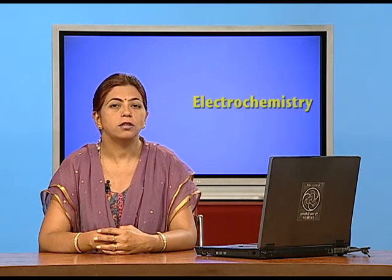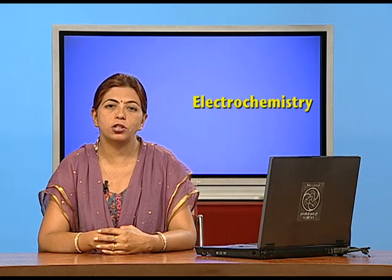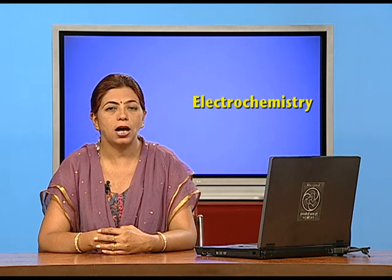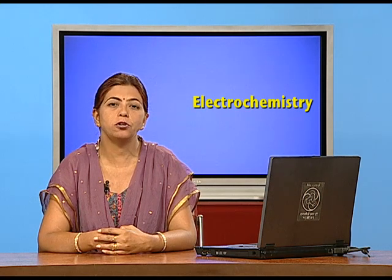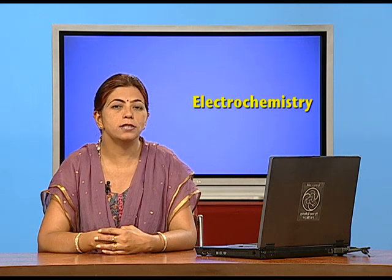Dear students, in the previous class I have explained to you the working of the standard hydrogen electrode, that is the reference electrode, to measure the cell potentials of various half cells. I have also explained the formula to calculate standard electrode potential, that is E naught equals E cathode minus E anode. But when the concentration is not unity, then how to measure the electrode potential?